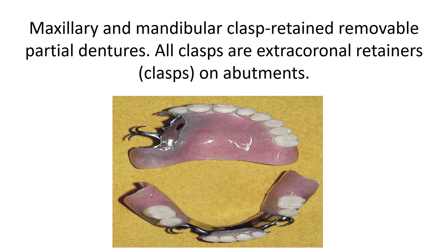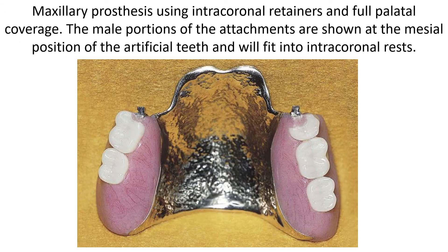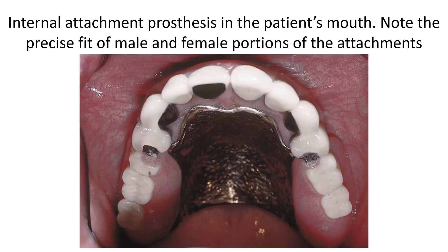Prostheses are shown intraorally in occlusion. A maxillary prosthesis uses intra-coronal retainers and full palatal coverage; the male portions of the attachments are at the mesial position of the artificial teeth and fit into intra-coronal rests. The internal attachment prosthesis in the patient's mouth demonstrates the precise fit of male and female portions of the attachments.